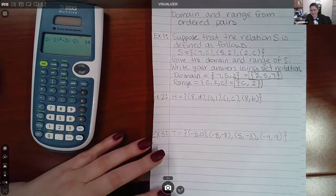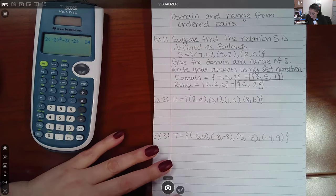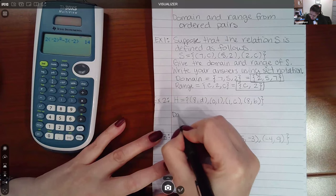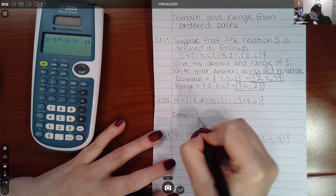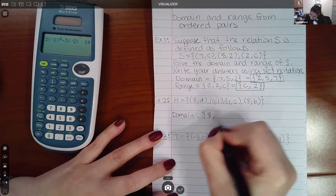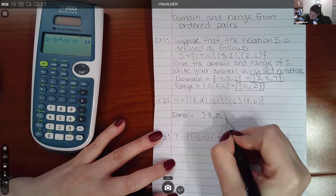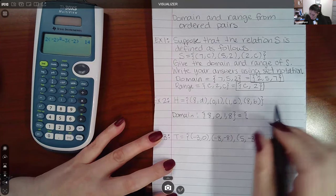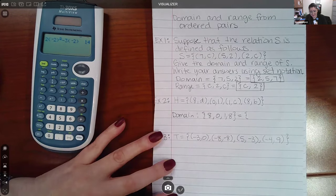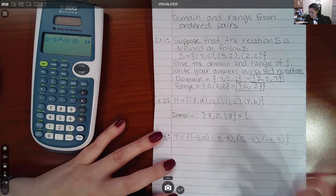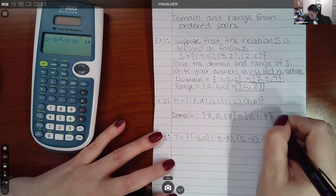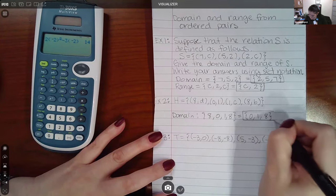For the relation H, my domain is gonna be eight, zero, one, and again eight. Now I'm gonna do two things: I'm not gonna write eight twice - it's already there in the set - and I'm gonna put them in order. So this is the final domain.